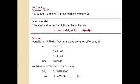Come to the next question, question number 13 of exercise 6.1. The question says: if b, c, p, q, r are in AP, prove that b plus r equals c plus q equals 2p. This is an important question. Before starting, let us recall from last lecture that the standard form of arithmetic progression is a, a+d, a+2d, and the last term a plus n minus 1 into d.